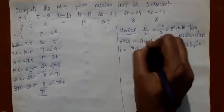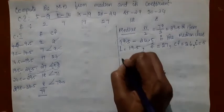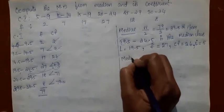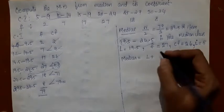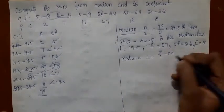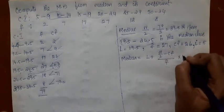So median is equal to L plus N by 2 minus CF by F into I.